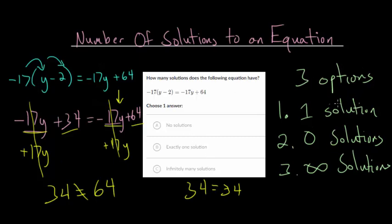So, you're going to see these three options come up. Either you actually get a value, like something like y equals 2, that would be like the first one. Or, you get something that's nonsense, like 34 equals 64, which, obviously, they aren't equal. So, that's option number two. That's zero solutions.